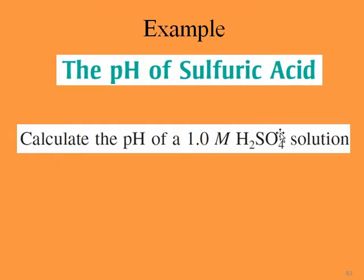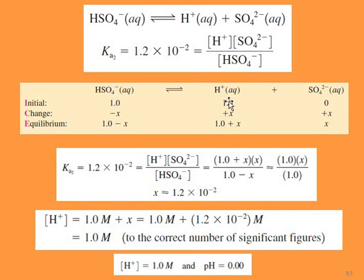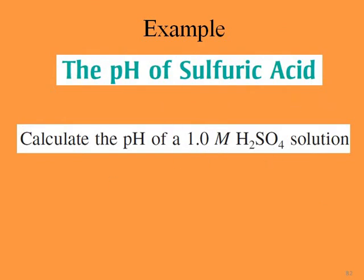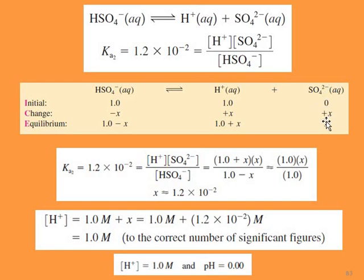Setting up the ICE table: initial [HSO₄⁻] = 1 (from complete first dissociation), initial [H⁺] = 1. So equilibrium gives (1 + x)(x) / (1 − x) = 1.2 × 10⁻². Neglecting x in (1 + x) and (1 − x), we get x ≈ 1.2 × 10⁻². Total proton concentration is 1 + x ≈ 1 mol/L, so the second dissociation contribution is negligible, and pH = 0.